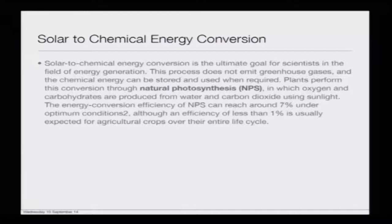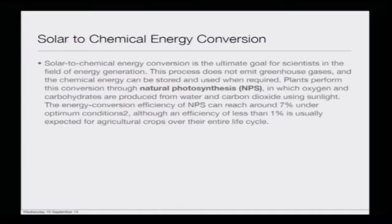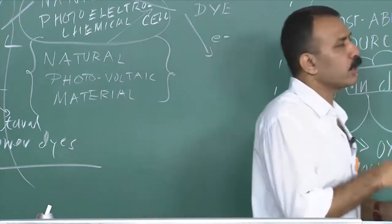Solar-to-chemical energy conversion is the ultimate goal for scientists in the field of energy generation. This process does not emit any greenhouse gases, and the chemical energy can be stored and used when required — in the form of hydrogen. Plants perform this conversion through natural photosynthesis (NPS), producing oxygen and carbohydrates from water and carbon dioxide using sunlight. The energy conversion efficiency of NPS can reach around 7% under optimum conditions, although less than 1% efficiency is usually expected for agricultural crops over their entire life cycle.